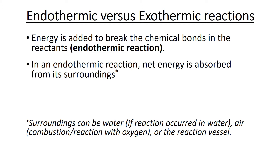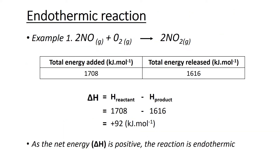In an endothermic reaction, energy is added or absorbed from the surroundings to break the chemical bonds in the reactants. The surroundings can be the water if the reaction took place in water, the air, or even the reaction vessel. For example, nitric oxide reacts with oxygen to give nitrogen dioxide. The reactants measure 1708 kilojoules per mole and the products 1616 kilojoules per mole. So 1708 minus 1616 gives a positive value of 92 kilojoules per mole, indicating the reaction is endothermic.